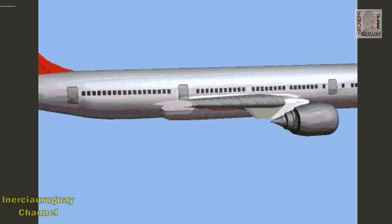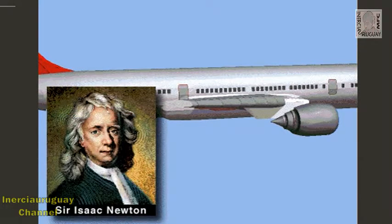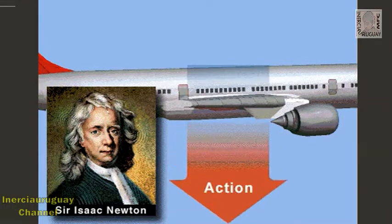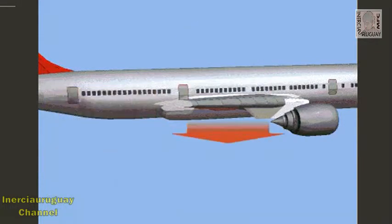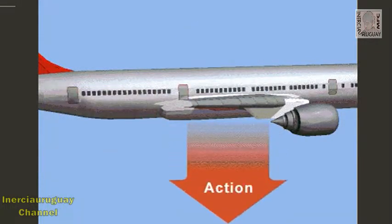How does an airplane fly? Physicist Sir Isaac Newton stated in his third law of motion that for every action, there must be an equal and opposite reaction. In an airplane, the wings push the air downward, and in reaction, the air pushes the wings upward.